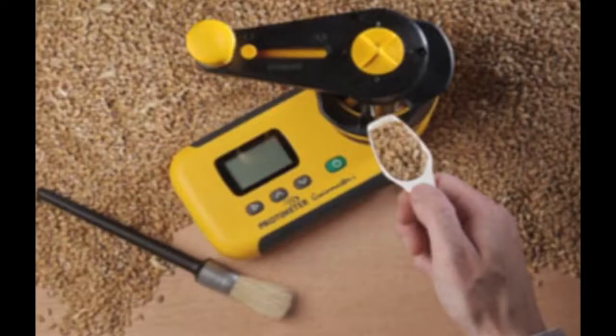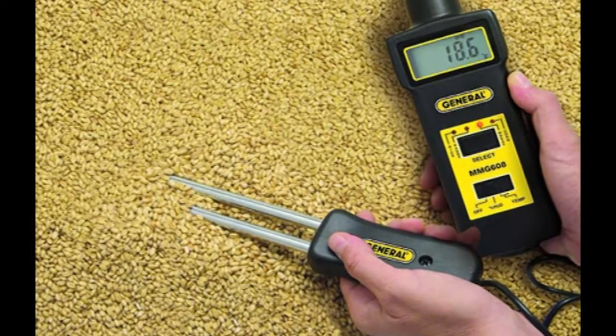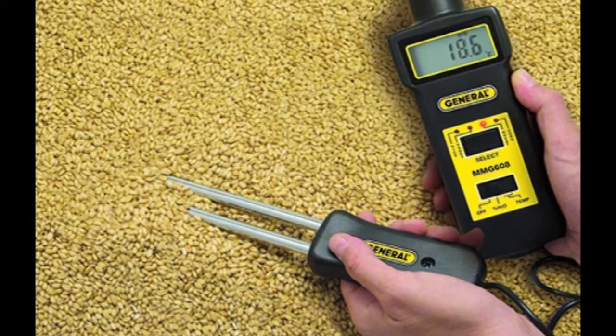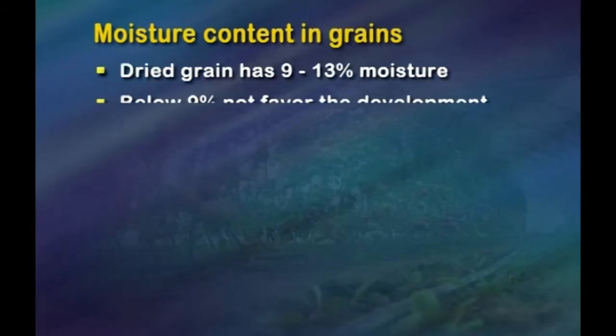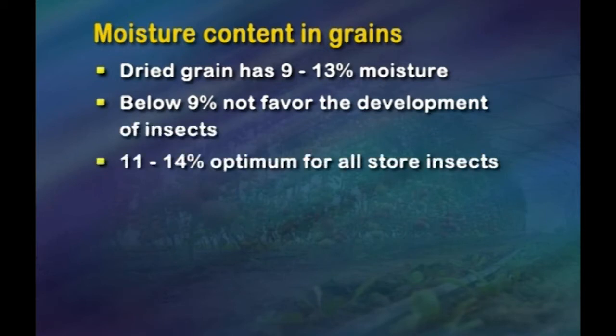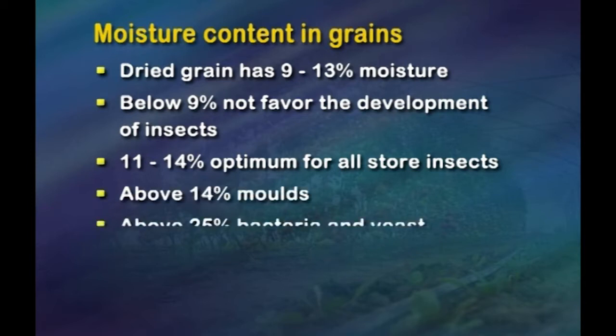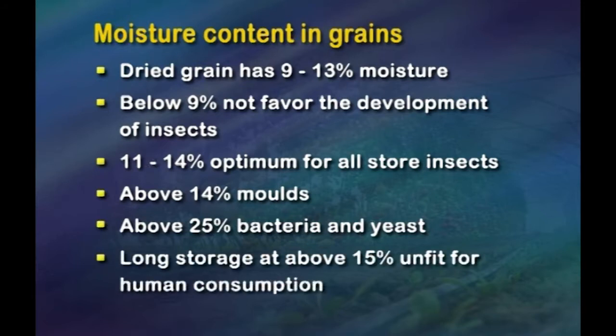Coming to the nature of moisture in the grain: water or moisture in the grain is of two distinct types. One is chemically and physically bound. Chemically bound water is part of the chemical composition of the grain — also called water of composition. Removal of such water would mean alteration of the entire grain structure, affecting storability, viability and economic value, and is thus undesirable. Physically bound water, also known as free water, is divided into two types: adsorbed and absorbed water. Dry grains have 9 to 13 percent moisture; less than 9 percent does not favor insect development; 11 to 14 percent is optimum for all stored insects; greater than 14 percent favors moulds; and greater than 25 percent favors bacteria and yeast.